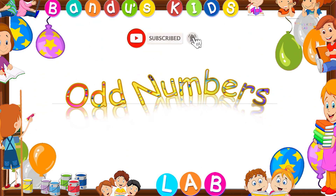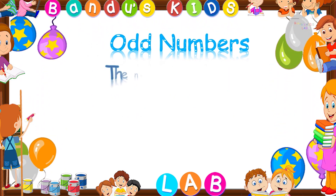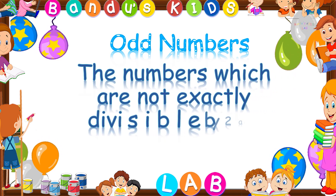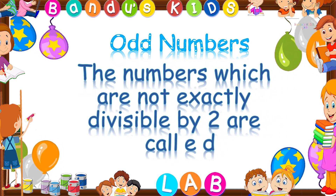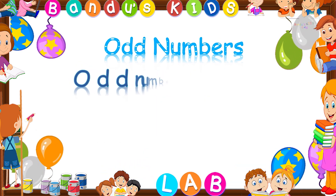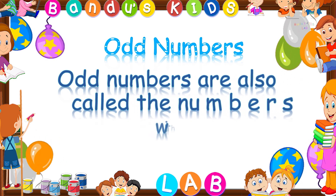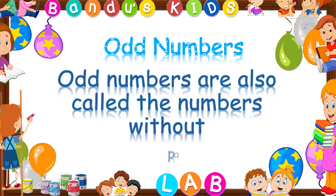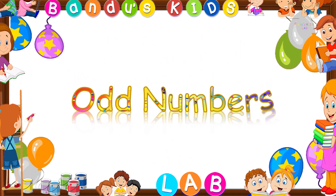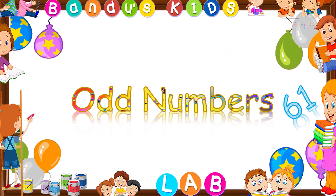Odd numbers. The numbers which are not exactly divisible by 2 are called odd numbers. Or odd numbers are also called the numbers without pair. Now, let's read the odd numbers from 0 to 9.